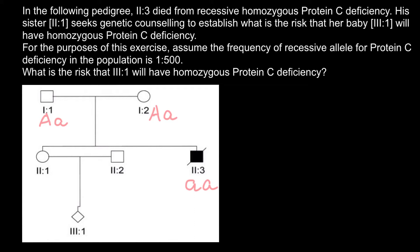Now, what is the risk that the sister of this person — individual 2.1 — is heterozygous? If she were homozygous dominant, there would be no risk of passing this genetic disorder to her child. So we need to find the probability that she is also heterozygous like her parents.